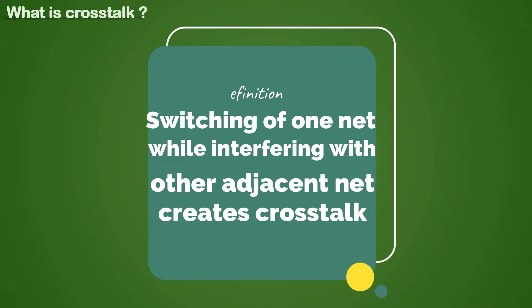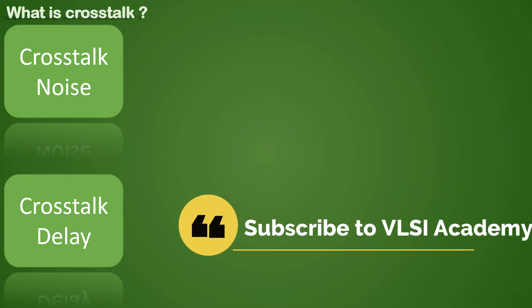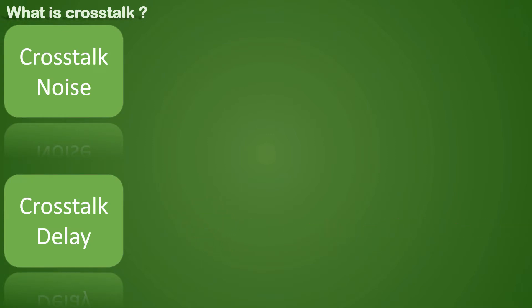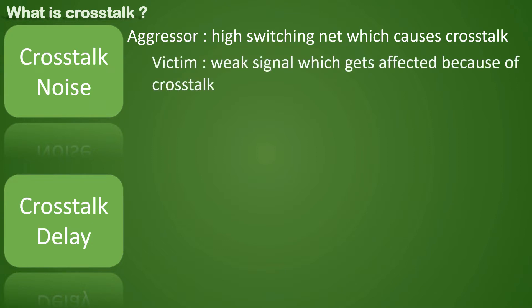In our previous video, we understood that switching of the signal in one net when interfering with the adjacent net creates crosstalk. There are two main effects of crosstalk: first is noise or a glitch, and second is crosstalk delay. We also saw that the net causing the crosstalk is the aggressor net and the one suffering because of it is the victim net.